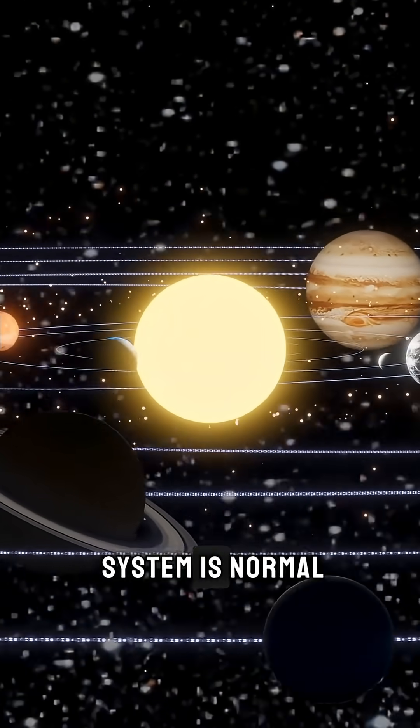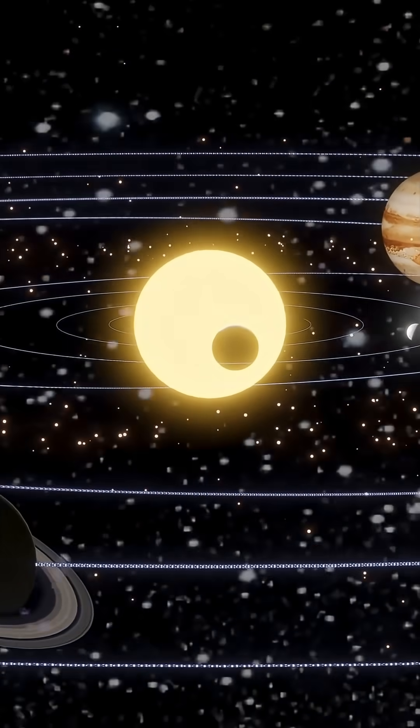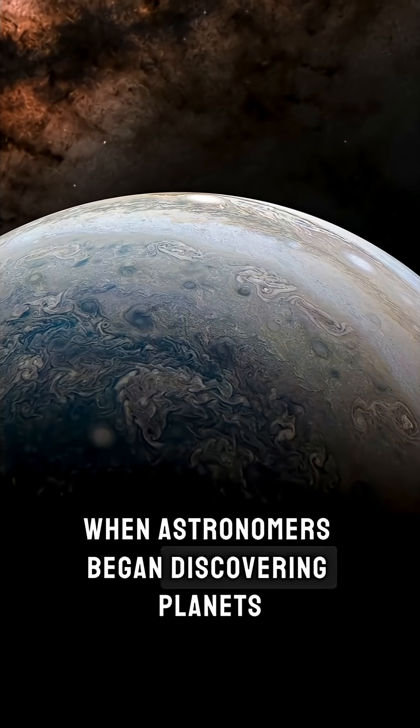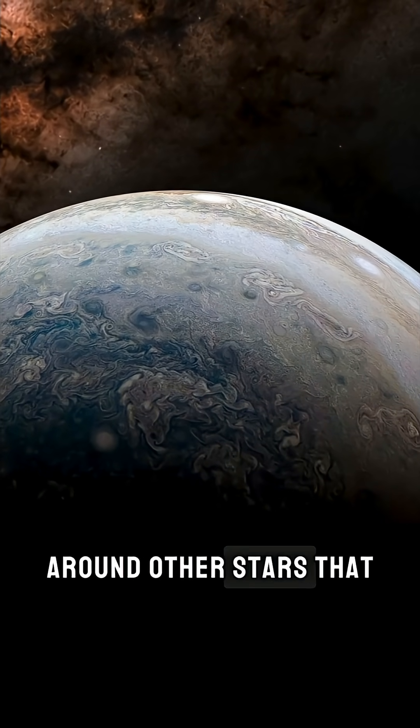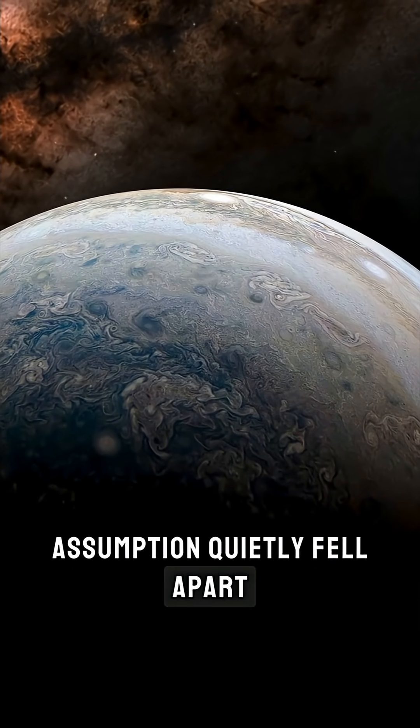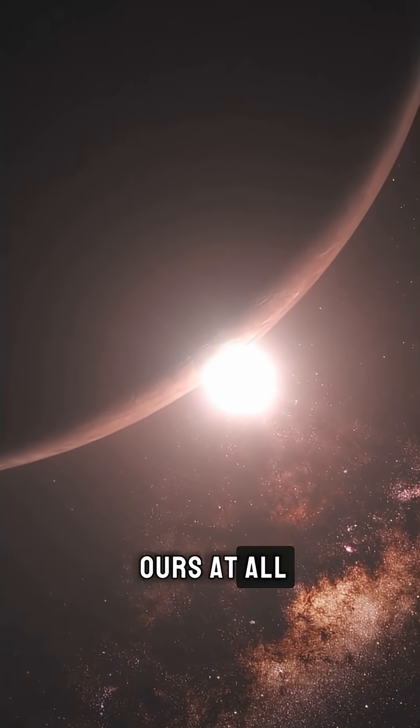Everyone assumes our solar system is normal, but it isn't. When astronomers began discovering planets around other stars, that assumption quietly fell apart. Most systems don't resemble ours at all.